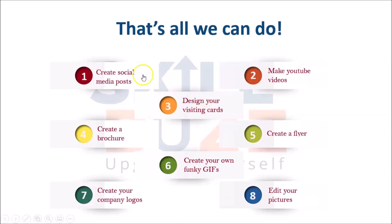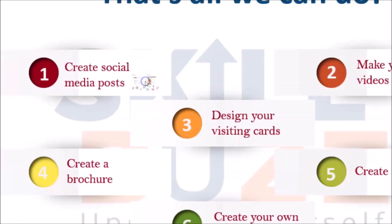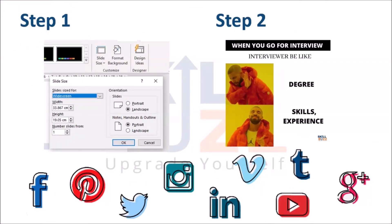So first of all, we can create a social media post. So let's learn how we can create a social media post. Step 1 is to choose the correct size for your platform. For Instagram, the size is different — the ratio is 1:1 or 4:3.